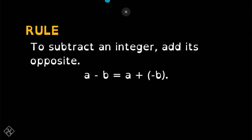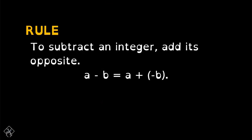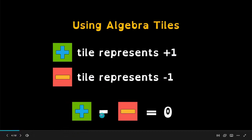The only thing that you need to remember is this rule: to subtract an integer, add its opposite. I will show you how to subtract integers using algebra tiles. Remember: the positive tile represents positive 1, and the negative tile represents negative 1. Therefore, the zero pairs — positive 1 and negative 1 together — equal zero. Ang tawag sa kanila ay zero pairs.